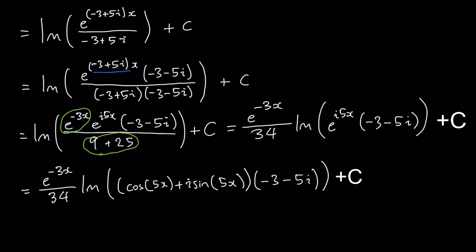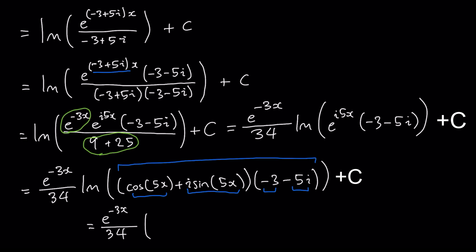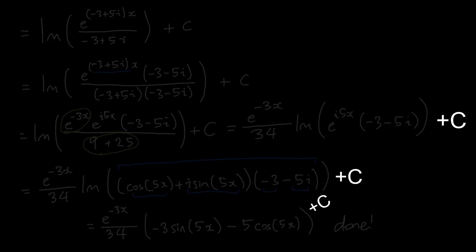Now at this next step I want to extract the imaginary component of this term. This is going to expand into a sum of four terms, but only two of them are going to be purely imaginary: this term times minus 3, and this term times minus 5i. Feel free to do the full expansion and confirm that this next line is correct. I will have that this is equal to e to the minus 3x over 34 times minus 3 sine 5x minus 5 cos 5x. And that is my answer. Thank you.